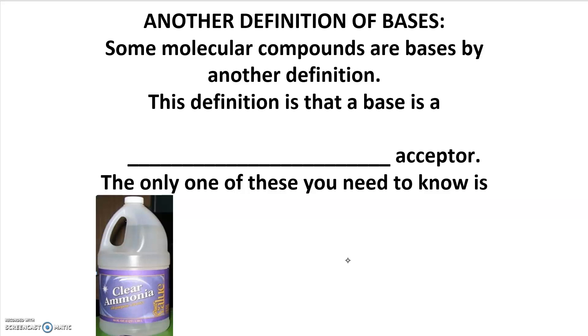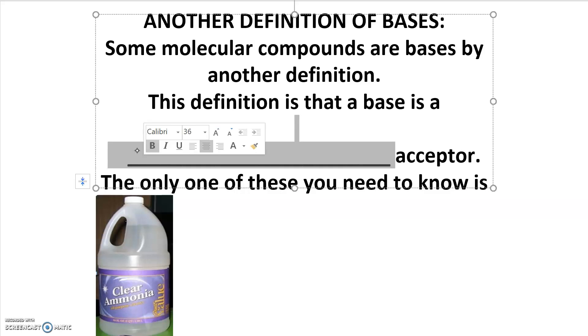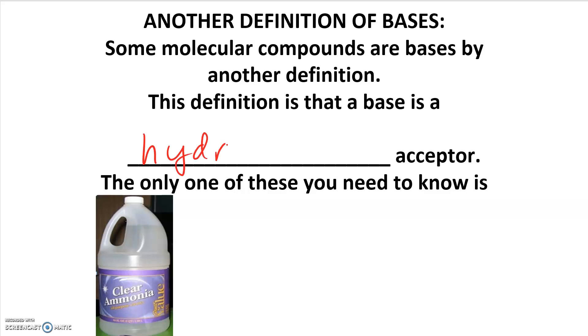There is one other definition of a base that you need to know about, and that is specifically about mostly molecular compounds. So acids are always molecules, but bases can be either ionic or molecules. The ones that are molecules don't create hydroxide ions, but they accept hydrogen ions. There's only one of these that we need to know about, and that's ammonia, which is NH3.